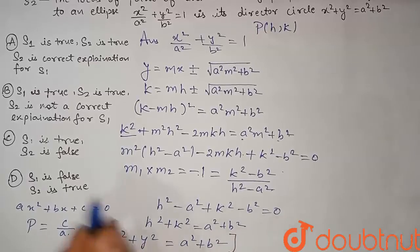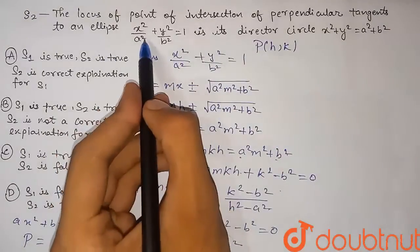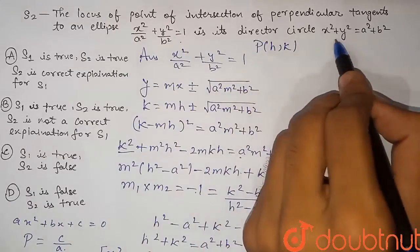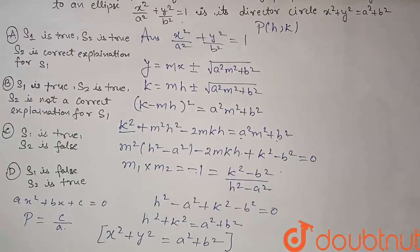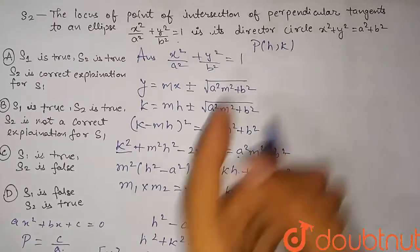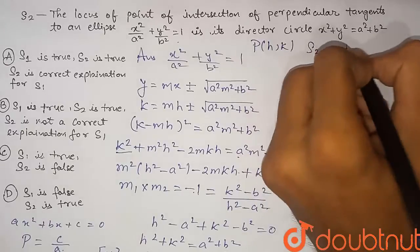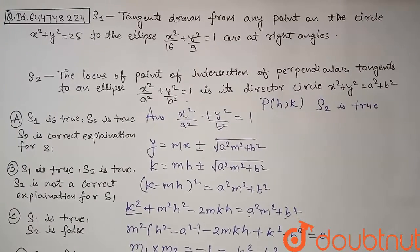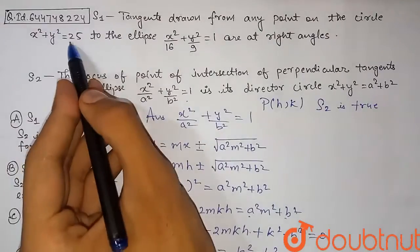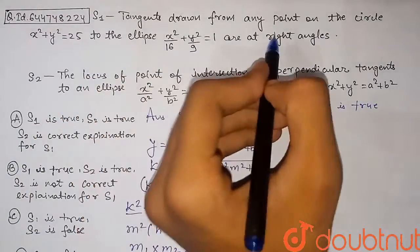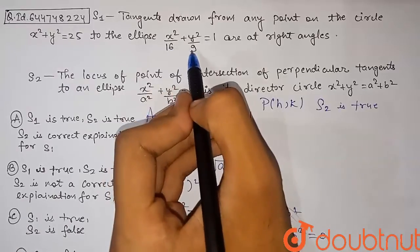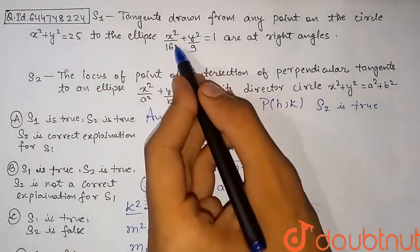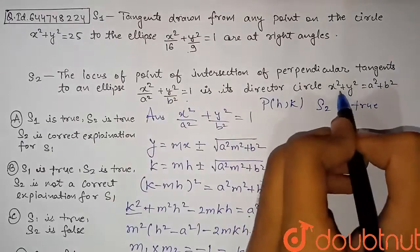This proves Statement 2: the locus of the point of intersection of perpendicular tangents to the ellipse x²/a² + y²/b² = 1 is its director circle x² + y² = a² + b². So Statement 2 is true. Now let's check Statement 1. Tangents are drawn from any point on the given circle to the ellipse — we need to verify if they are at right angles by checking the director circle equation of that ellipse.